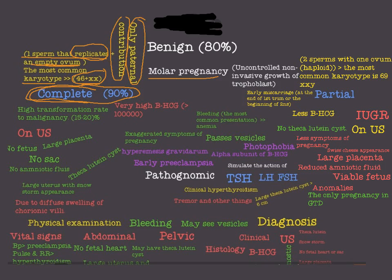In partial molar pregnancy, it is the result of two sperms — not one sperm that replicates, but two sperms — with one haploid ovum, not an empty ovum. So in partial molar pregnancy we have both maternal and paternal contribution. This is how we differentiate between them in karyotyping. The karyotype of partial molar pregnancy is 69XXY, while complete molar pregnancy is 46XX.